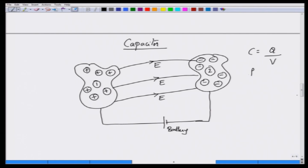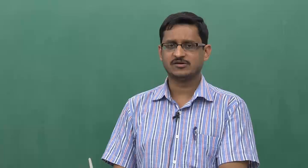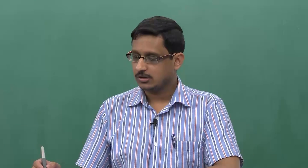Capacitance is measured in farads. Sometimes you look at capacitance per unit length, popular in transmission lines, measured in farads per meter. In VLSI systems you look at capacitance per square, measured in farads per meter squared, centimeters squared, or millimeters squared depending on the geometry considered.